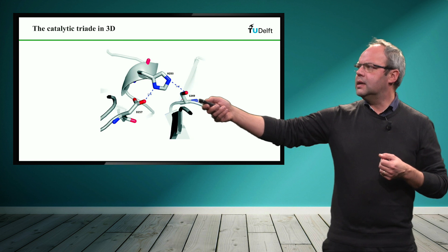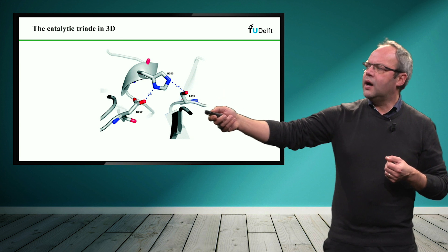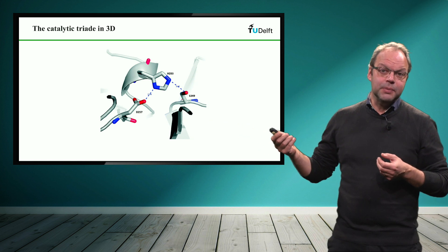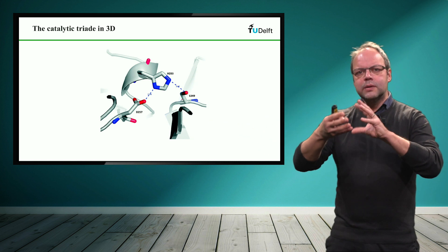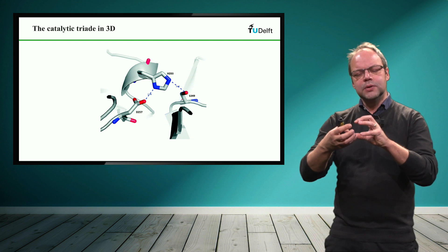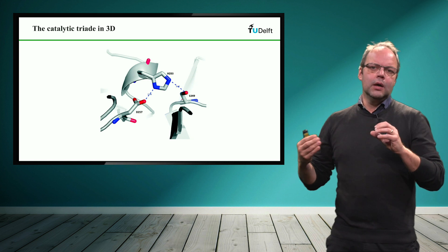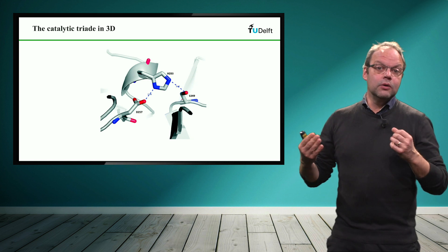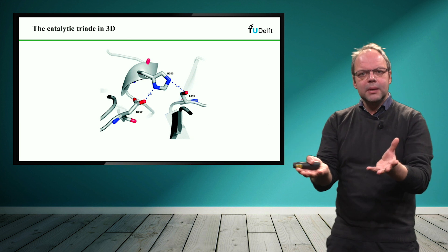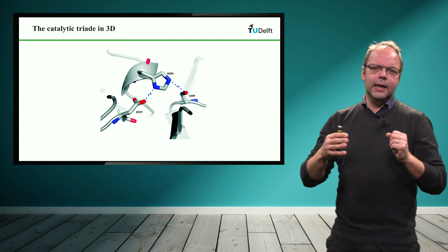So here you see the serine, to the left you see the histidine and to the far left on the bottom you see the aspartate. So you see that all these three amino acids are fixed in the spatial orientation to each other in such a way that the proton transfer can occur ideally. And this can only happen because the amino acids are in a very well defined enzyme active site.